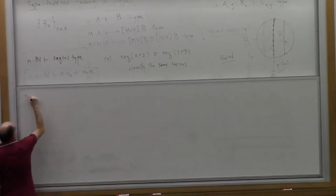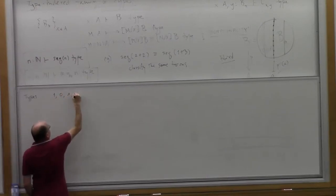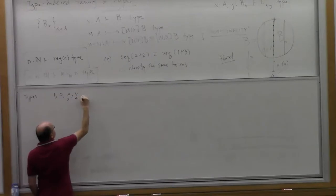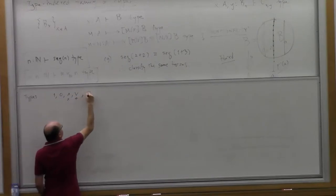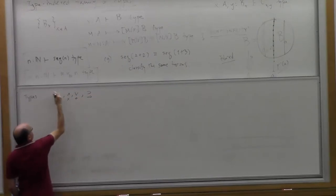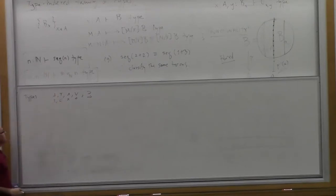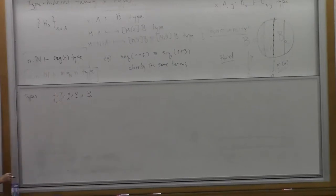The things we sort of start with were motivated by logic: we had the types 1, 0, or, cross, plus, implication, and function space. If I want my notation to be reasonably consistent, we can write those. Then we observed we could add additional types not motivated by logic — so the natural numbers would be one, and so on.